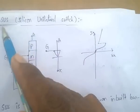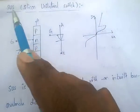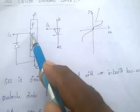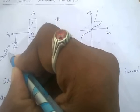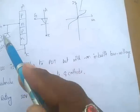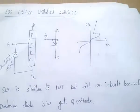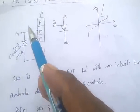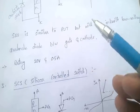Next device: SUS — Silicon Unilateral Switch. The structure is the same as PUT with the gate connected to N-type material, but the difference is an extra inbuilt low-voltage avalanche diode connected between cathode and gate. This avalanche diode distinguishes SUS from PUT. The ratings of SUS are 20V and 0.5A.